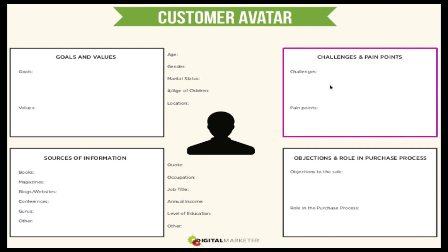Next we look at challenges and pain points. What are the challenges they're going through? Maybe it's an identity struggle, or a home situation where the kids want one thing and the parents want another. Whatever the challenges are, let's label them. Then the pain points — what are the things that are really hurting them? Maybe it's back pain, knee pain, or something very specific that your ideal consumer is dealing with.